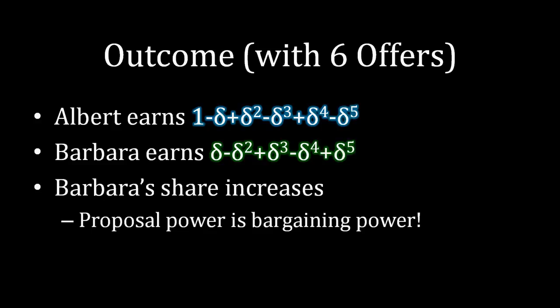If we looked at this with six offers, now in this sixth stage, Barbara is receiving the final proposal. She's getting a little bit more proposal power than she had in the previous stage. Continuing with this pattern, what do we see? In Barbara's payoff, we're now adding a little bit more delta to the fifth power and taking a little bit away from Albert's payoff, minus delta to the fifth power. That's because proposal power is a form of bargaining power, and Barbara's share of that proposal power is increasing toward the end of the game. But once more, as we continue out with these payoffs, the delta to higher and higher exponents is getting smaller and smaller.